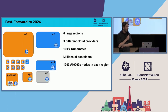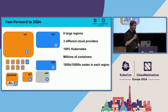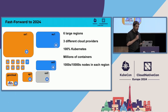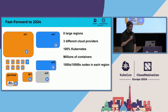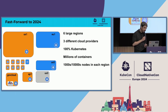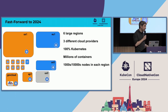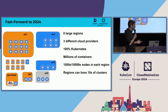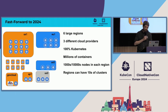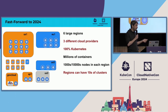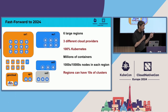Fast forward to 2024, this is far more complex. We're running in six different regions on three different providers, everything is running in Kubernetes, and we run millions of containers. What's important for this talk is we run thousands to tens of thousands of nodes in each region, which means we need to have multiple clusters per region. In some regions, we have dozens. The key facts for today's discussion are: we're 100% Kubernetes, we run on three different providers, and regions can have up to dozens of clusters.